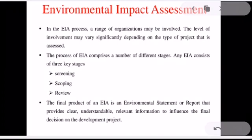In the EIA process, a range of organizations may be involved including government agencies, developers, and non-governmental and public organizations. The level of involvement may vary significantly depending on the type of the project being assessed. The process of EIA comprises a number of different stages. These stages may be labeled differently in different parts of the world but their goals are similar. Any EIA consists of three key stages. The first stage is called screening — a preliminary assessment stage which involves the identification and collection of relevant information. During this step, the decision is made on whether an EIA is required for the project.